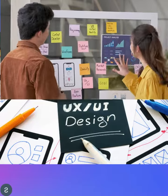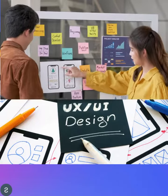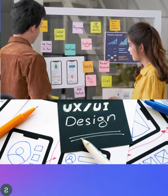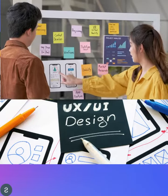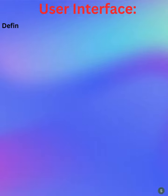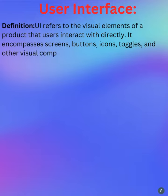UI and UX are two essential aspects of product design, but they serve distinct purposes. UI, or User Interface, refers to the visual elements of a product that users interact with directly. It encompasses screens, buttons, icons, toggles, and other visual components. UI design aims to create an intuitive and visually appealing interface — it's about how the product looks and feels.